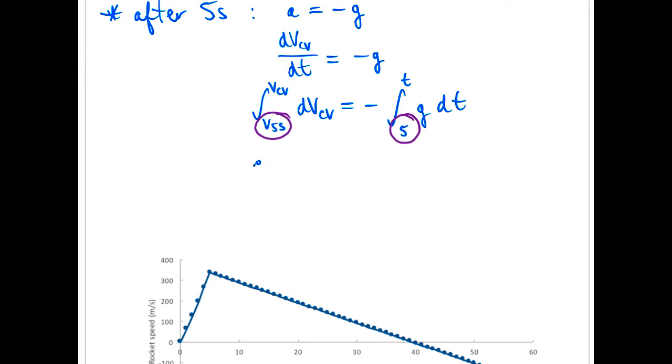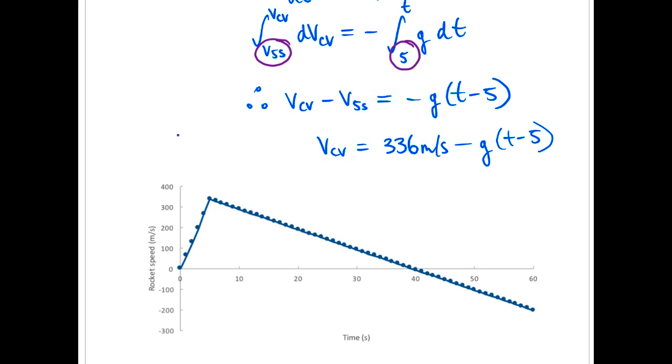Okay, so we do the integration. All right, now I plotted this. I think it's pretty cool for us to take a look at this rocket velocity here. Okay, so we use the velocity expression above for the first five seconds. So we see the velocity increasing as it accelerates until it hits that 336 meters per second.